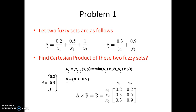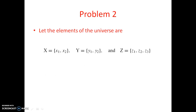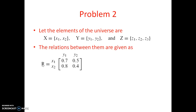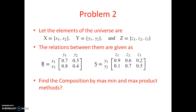Now let us move on to compositions — how to find the compositions. This is the second problem. Universe X has elements X1, X2; universe Y has elements Y1, Y2; universe Z has elements Z1, Z2, Z3. The relations between them are given as relational matrices: R is the relation between X and Y, and S is the relation between Y and Z. We need to find the composition by the max-min method and the max-product method.